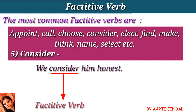The next verb is consider. Example: 'We consider him honest.' Here, 'we,' a pronoun, is the subject. 'Consider' is the verb. 'Him,' a pronoun, is the object. 'Honest,' which is an adjective, is used to describe the object, so it is the objective complement.